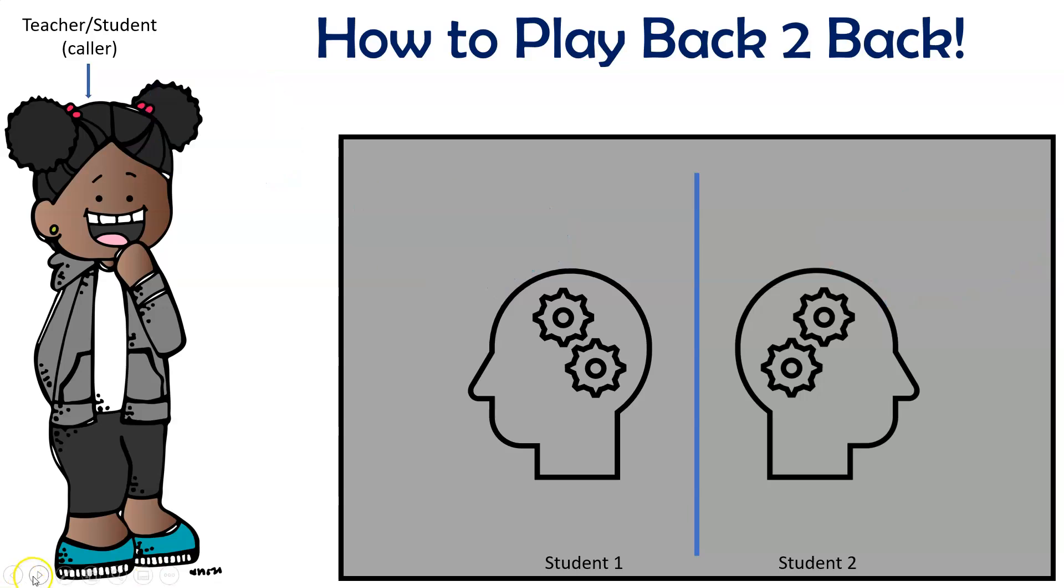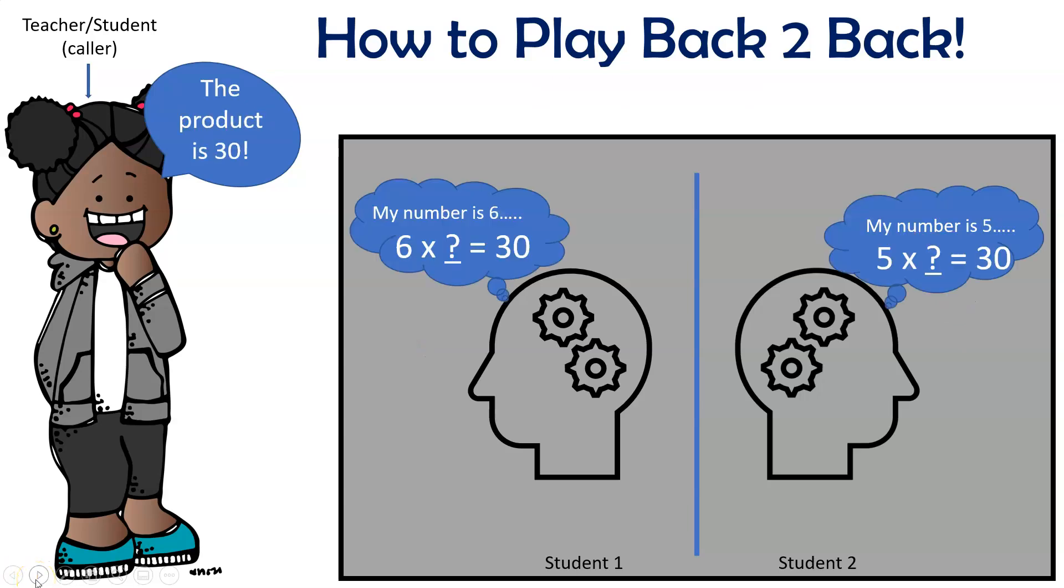In this next example, we're going to be using the multiplication version of the back-to-back game. Like before, the caller would say, write any digit 1 through 9. And student 1 writes a 6. Student 2 a 5. The caller would then multiply those two numbers and call out the product. Making sure to say out loud, the product is 30. Both students would then automatically think how to go about solving for it.